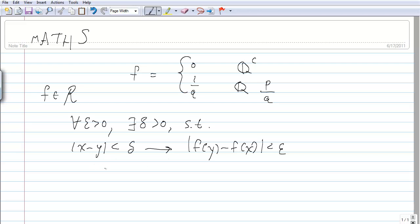So, I'll show that it's continuous at the irrationals. Let's pick some epsilon, and say epsilon is equal to 1 over 10.